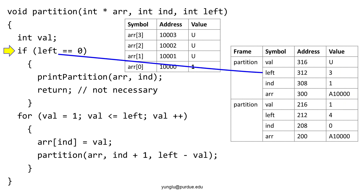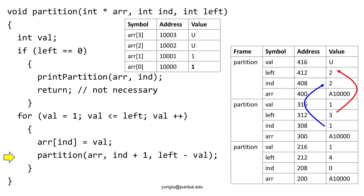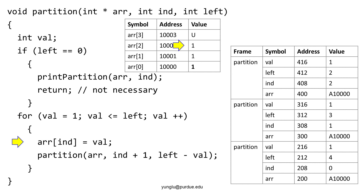The program enters the function to check the stop condition. The value of left is 3 and the stop condition is not met. The function moves to the for loop and initializes vl to 1. The next line assigns 1 to the second element of the array. The next line is another function call. The first argument is still the address of the heap memory. The second argument is ind plus 1 and it is 2. The third value is left minus vl and it is 2. The function first checks whether the stop condition is met. Since the third argument is 2, not 0, the stop condition is not met. The function continues to the for loop and initializes vl to 1. The line assigns 1 to the third element of the array.